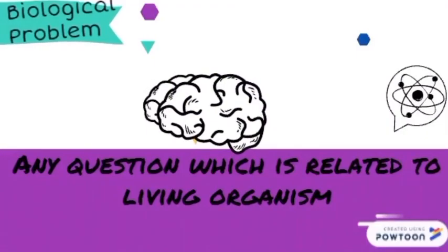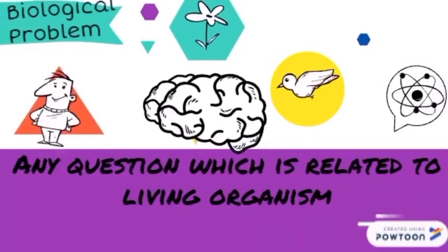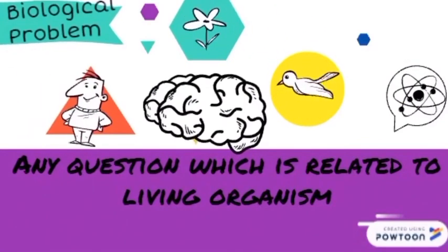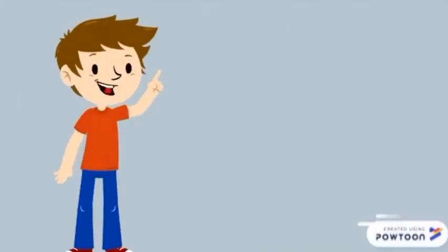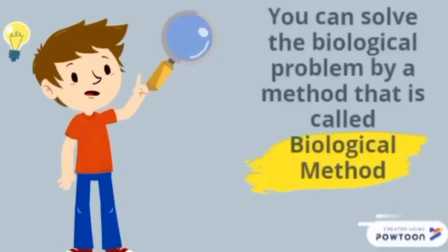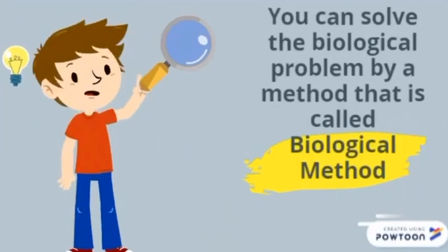Any question that is related to a living organism is known as a biological problem. For example, when you have a question in your mind related to animals, plants, or human beings, it is a biological problem. You can solve a biological problem by a method known as the biological method, and by using it, you can become a scientist too.